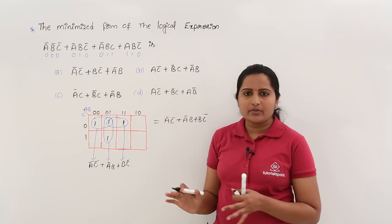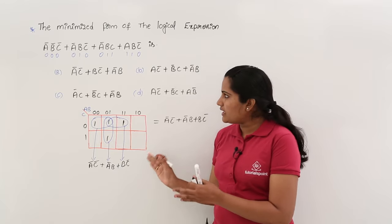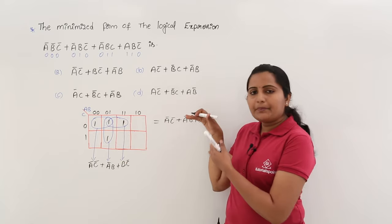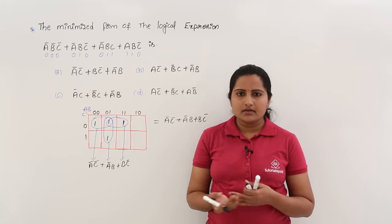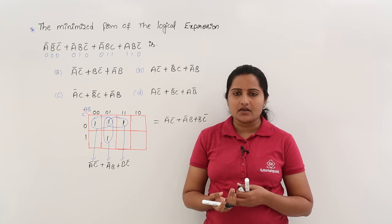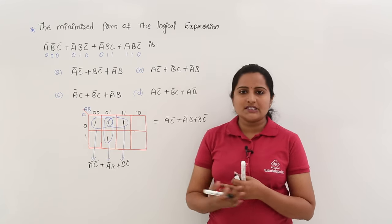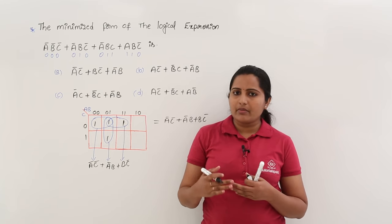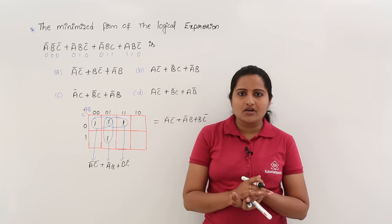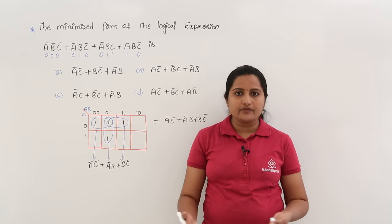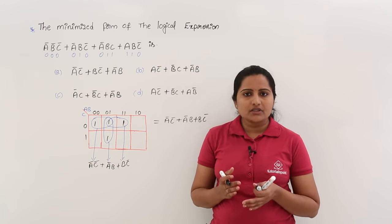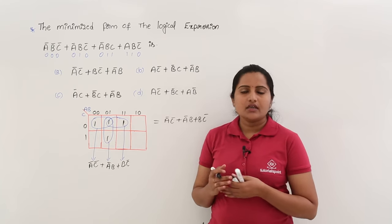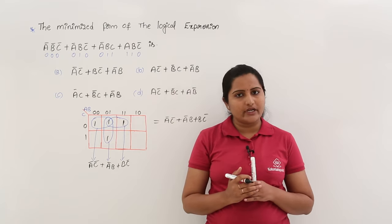To summarize what we did: we decoded each product term to binary, placed ones in the K-map, grouped them into prime implicants, and added the prime implicants — just a few simple steps. When solving by Boolean algebraic laws, you need to remember all possible laws and theorems, which can be confusing. So to avoid that confusion, this pictorial K-map approach is the preferred way to simplify Boolean expressions.